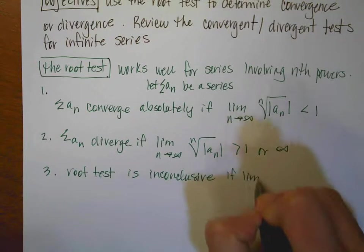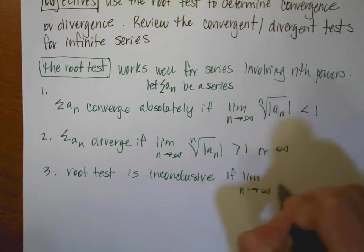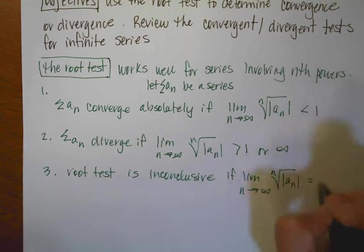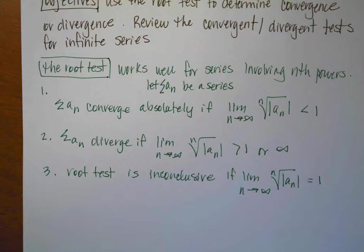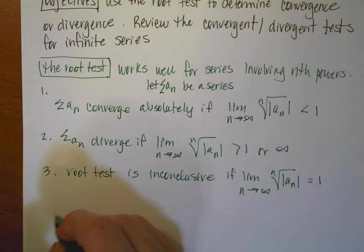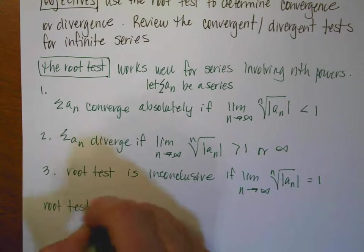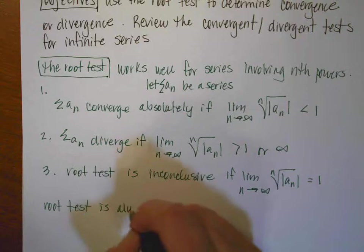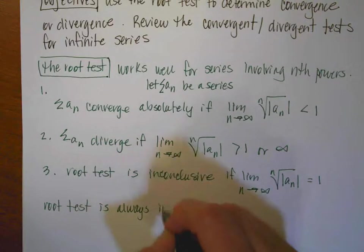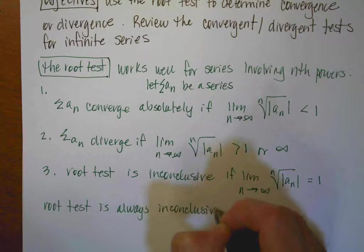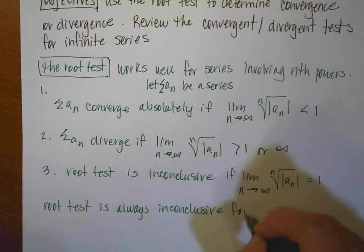if the limit as n approaches infinity of the nth root of the absolute value equals 1. And remember, if the test is inconclusive, then you would have to attempt another test. Another tidbit of information is that the root test is always inconclusive for a p-series.